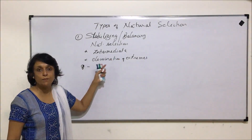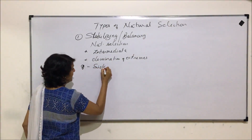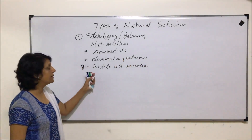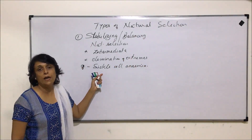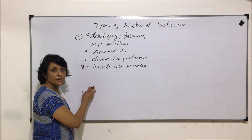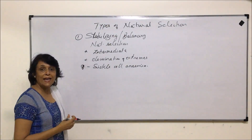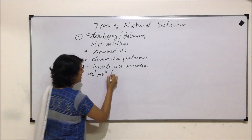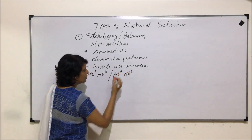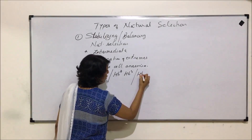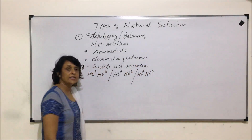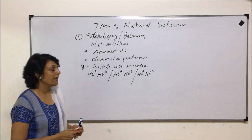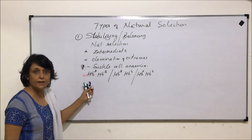The example used to understand stabilizing or balancing natural selection is sickle cell anemia. There are three possible situations: one is a normal condition (HbA HbA), one is a carrier condition (HbA HbS), and the third is where both alleles are recessive (HbS HbS), resulting in sickle-shaped RBCs and defective hemoglobin.